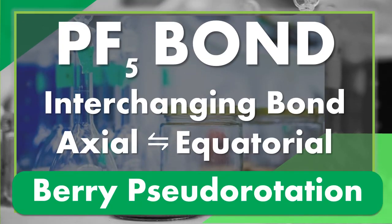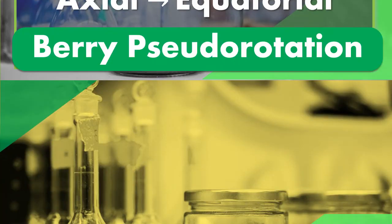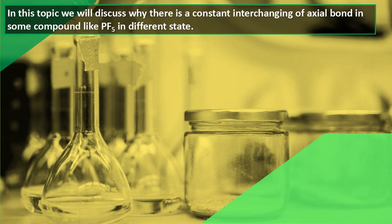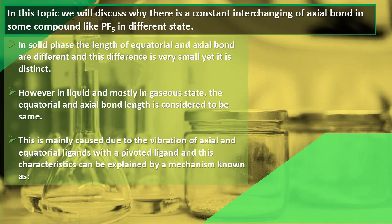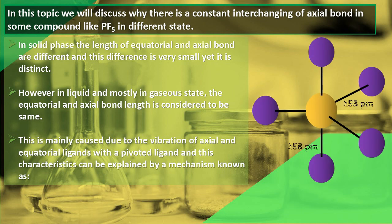In this presentation we will learn about PF5 bond length with respect to Berry Pseudo rotation. First of all we must understand under which state the bond length differ. For PF5, in solid state the axial bond is not equal to the equatorial bond, as shown in the figure.